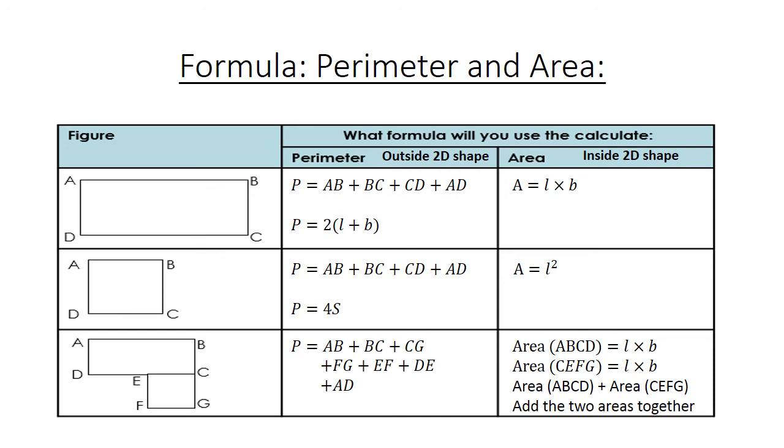Then we are going to calculate the area for CEFG, the bottom one, also equals length times breadth. And finally, the area of ABCD plus the area of CEFG. We are going to add them together to find the total area. Thank you.